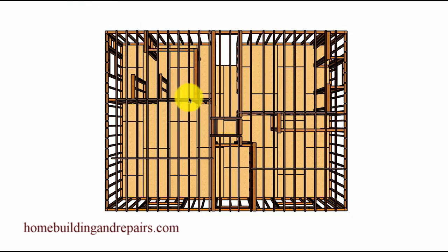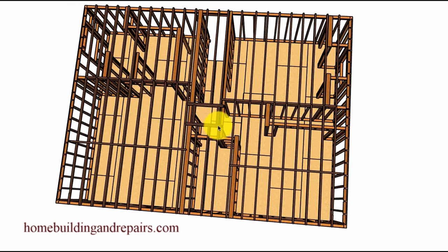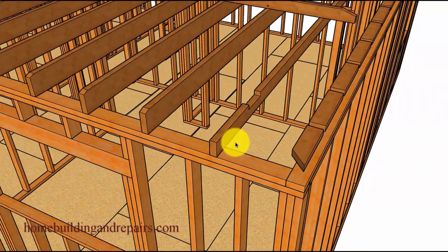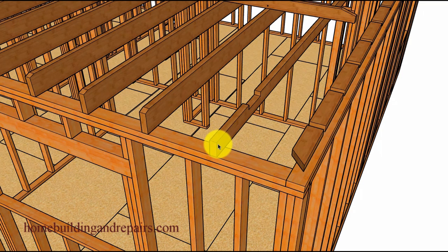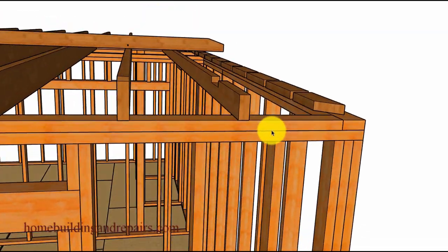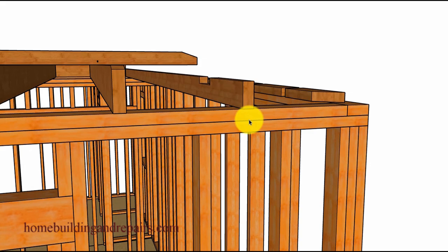We have two by six rafters, two by eight fascia board, and two by six ceiling joist. You might need to use different boards - remember I can't provide you with that information for your area because it might be different. You might be dealing with snow loads. If you notice, I changed this to a two by four and then notched it around the bottom of the hip.